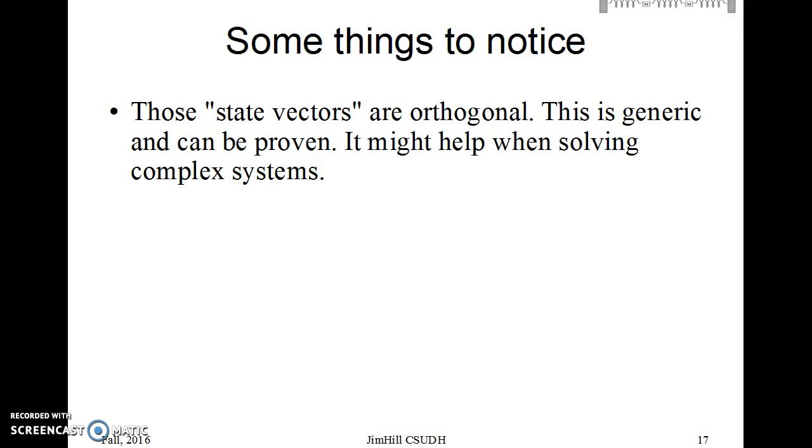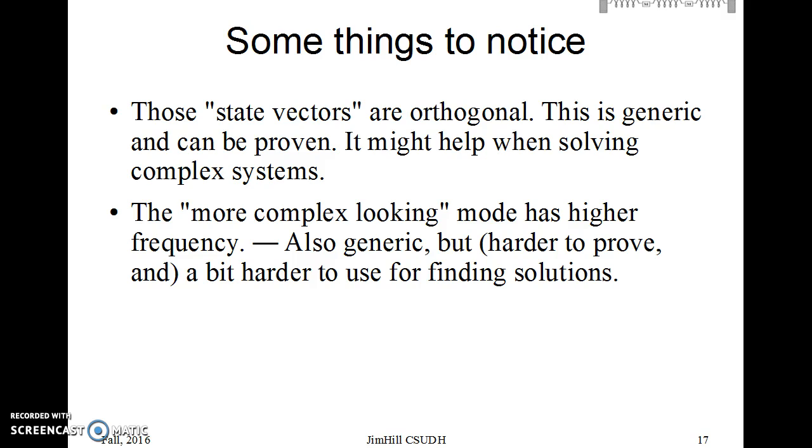So those state vectors are orthogonal to each other. It can be proven that that's always true, and it might help solve complex systems. We'll talk about that in class. In fact, you might also notice the more complex looking one, the one where they go opposite to each other, has a higher frequency. That's also generic. It's a little harder to prove, but it's true. It doesn't help you as much in finding solutions, but it might help you recognize if you find mistakes.